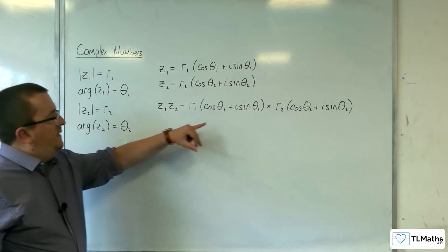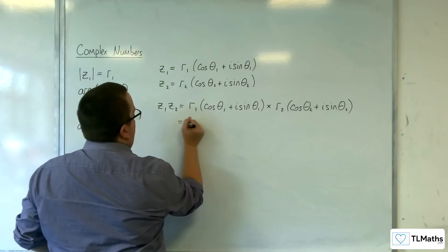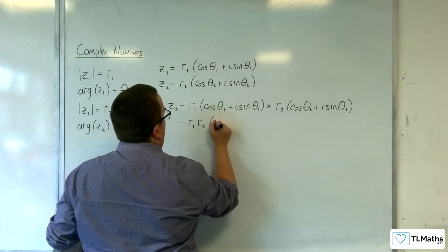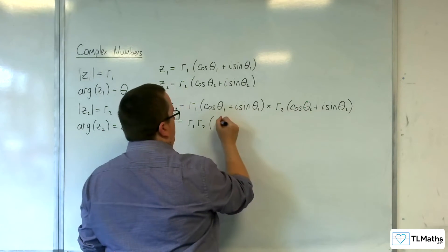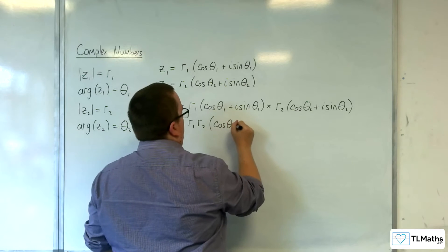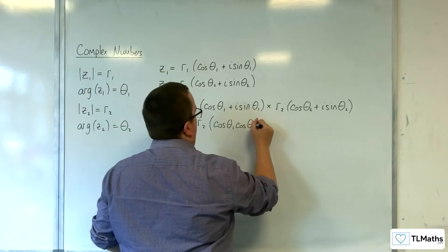So I can bring the R2 to the front and have this as R1 times R2, and then I'll have cosine theta1 times cosine theta2, so cosine theta1 cosine theta2.